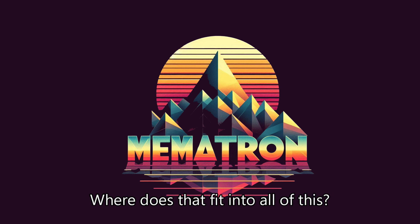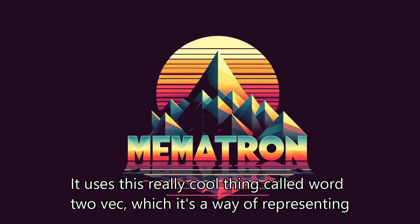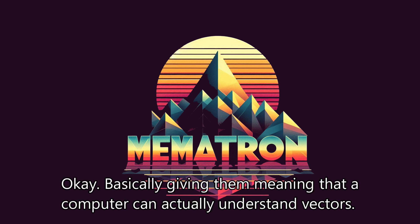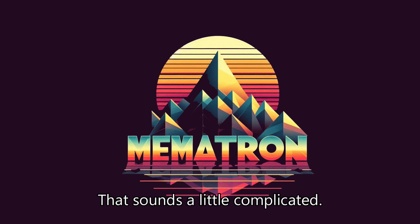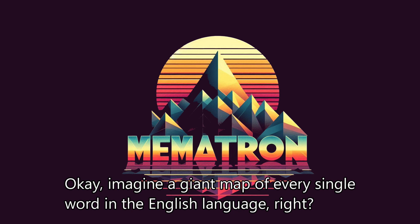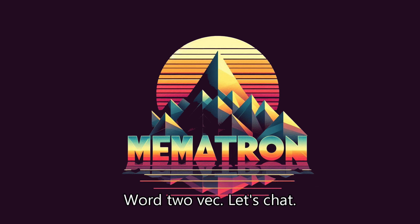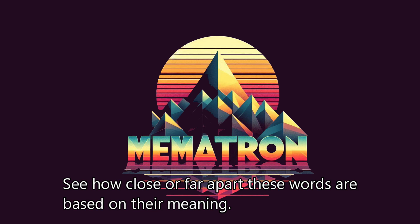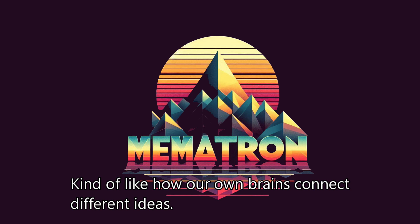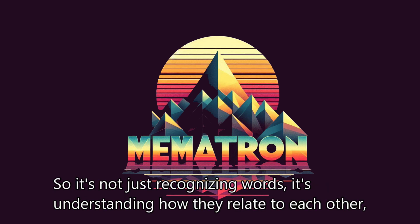But what about chat? Where does that fit into all of this? Chat is all about language. It uses this really cool thing called Word2Vec, which is a way of representing words as mathematical vectors — basically giving them meaning that a computer can actually understand. Imagine a giant map of every single word in the English language. Word2Vec lets chat see how close or far apart these words are based on their meaning. So it's understanding relationships between words and concepts, kind of like how our own brains connect different ideas.